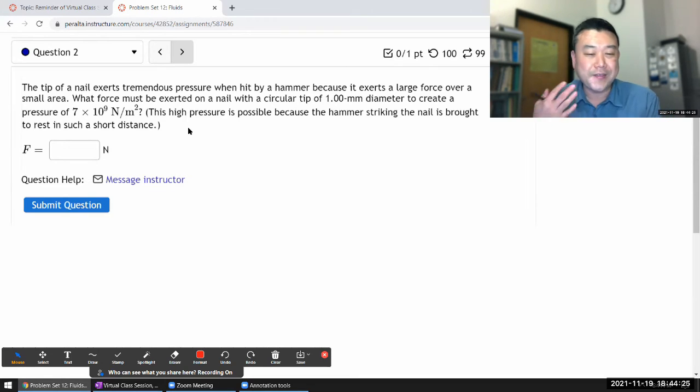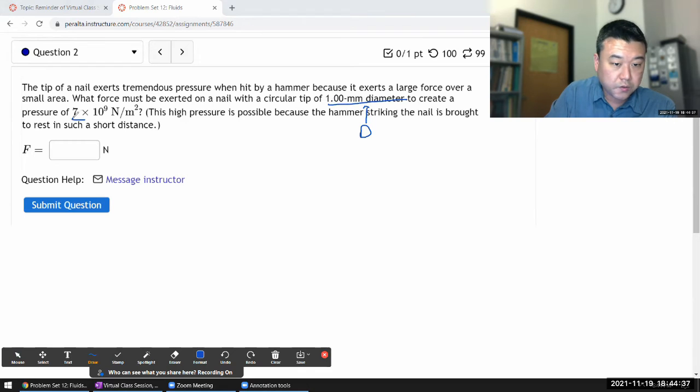What force must be exerted on a nail with a circular tip of some diameter D to create a pressure of this much? OK, it's high pressure, that's it, this is striking about the reason.